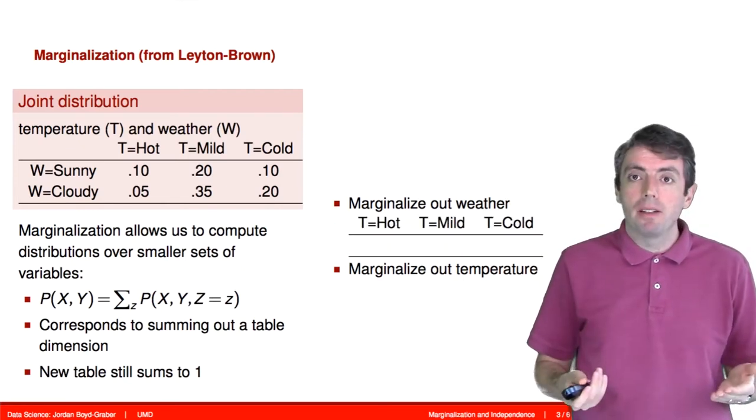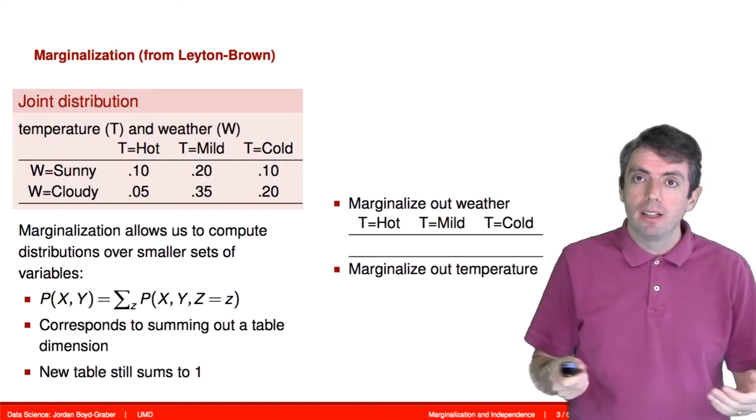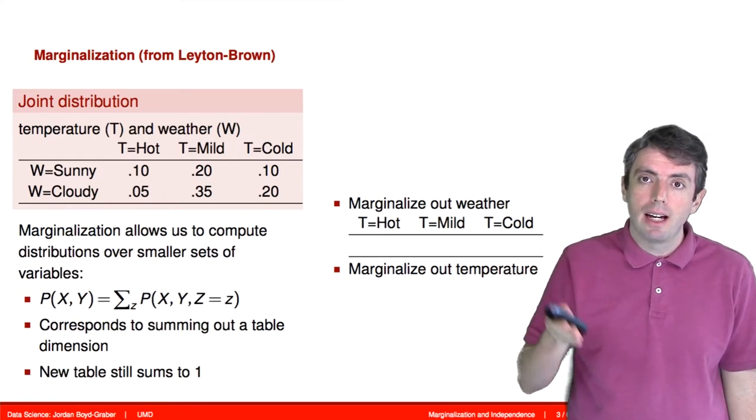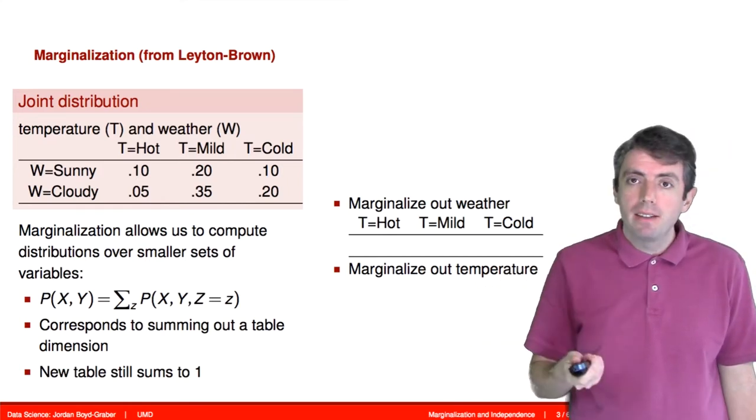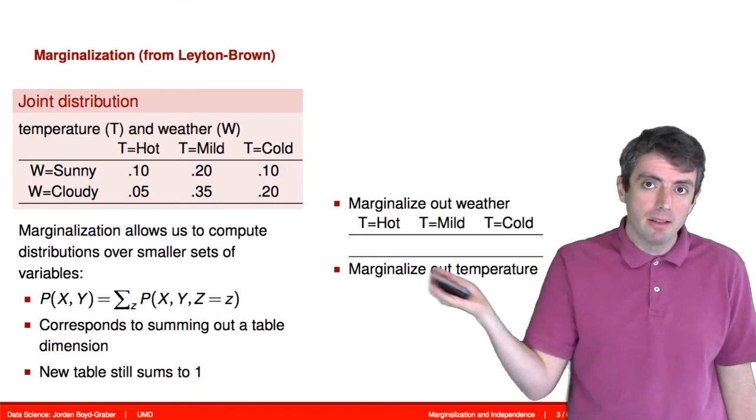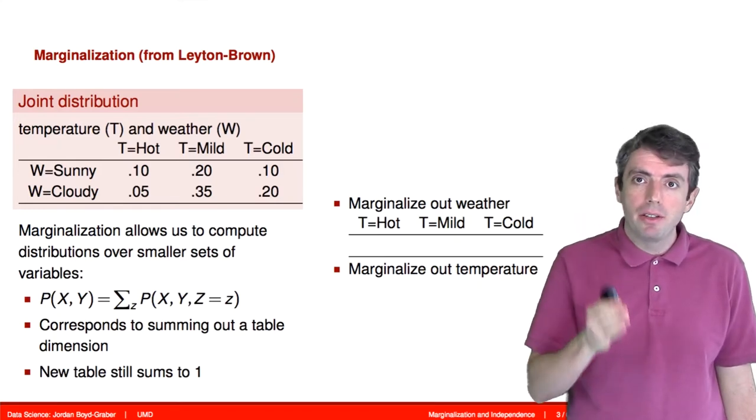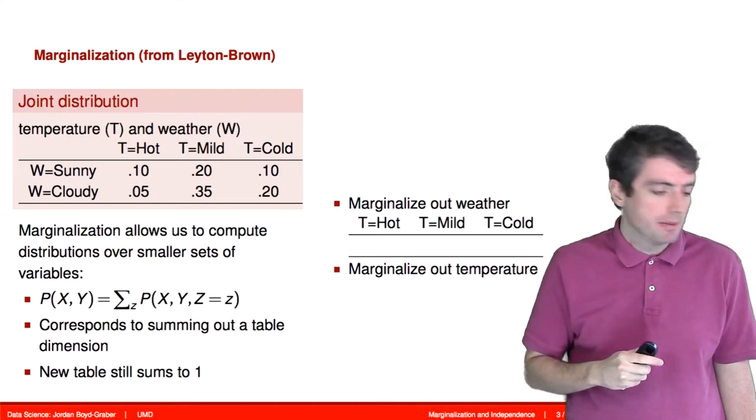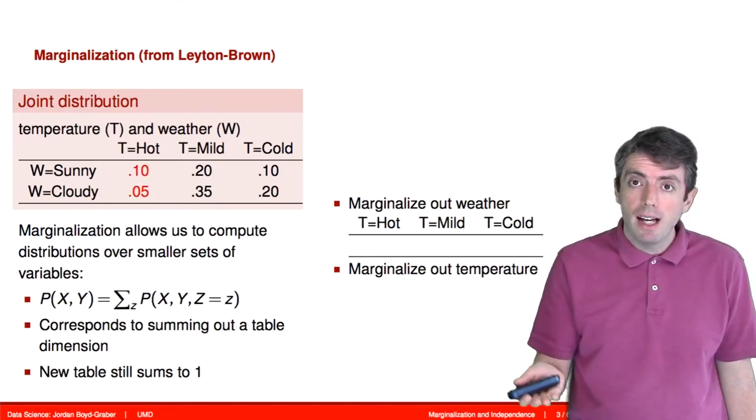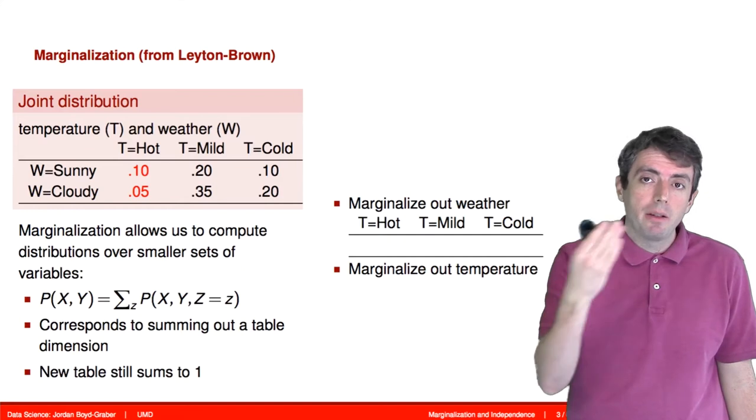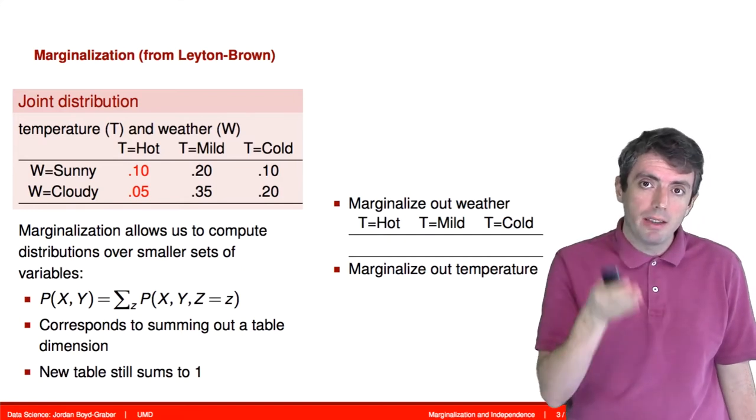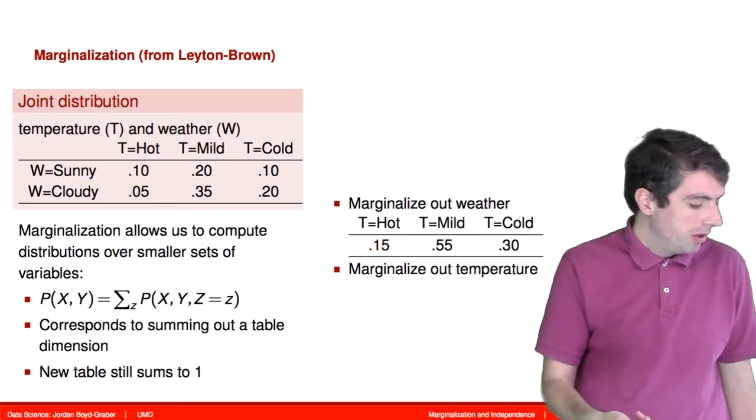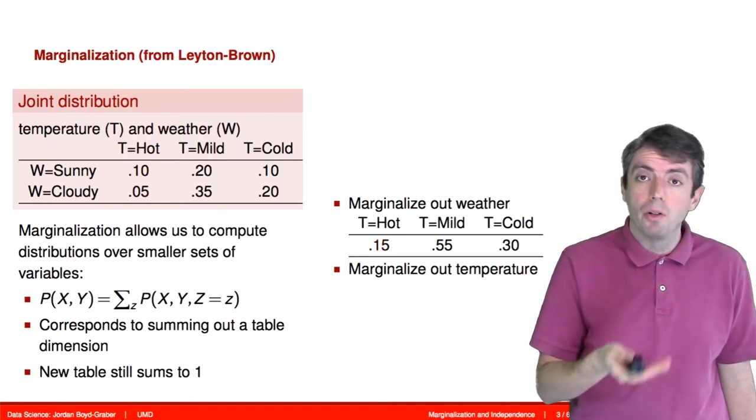Let's say that we want to marginalize out the weather. This is the random variable that corresponds to if it is cloudy or sunny. In this case, we take each of the columns and add the two values for that column together. So when the temperature is hot, it could either be sunny or cloudy. We take those two numbers and we add them together. We get 0.15.